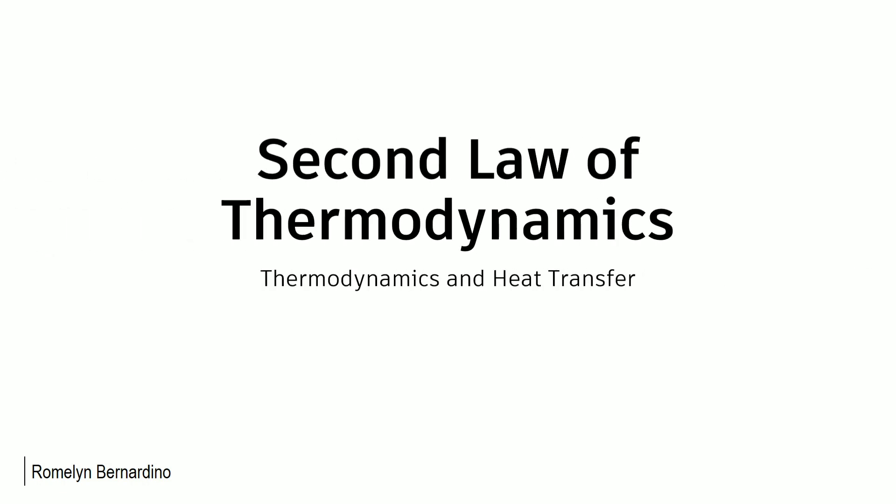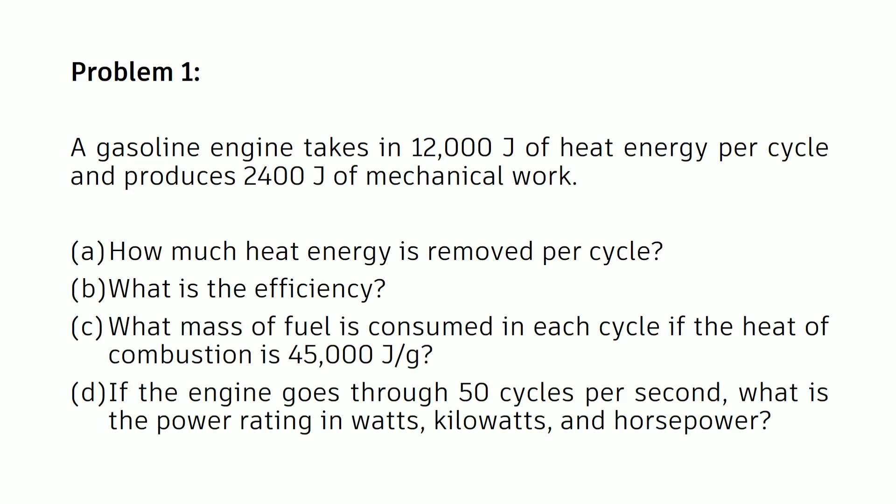Good day everyone. Today let us have another problem involving the second law of thermodynamics under thermodynamics and heat transfer. For part one, we have a gasoline engine that takes in 12,000 joules of heat energy per cycle and produces 2,400 joules of mechanical work. We are tasked to find: how much heat energy is removed per cycle, what is the efficiency, what mass of fuel is consumed in each cycle if the heat of combustion is 45,000 joules per gram, and if the engine goes through 50 cycles per second, what is the power rating in watts, kilowatts, and horsepower.